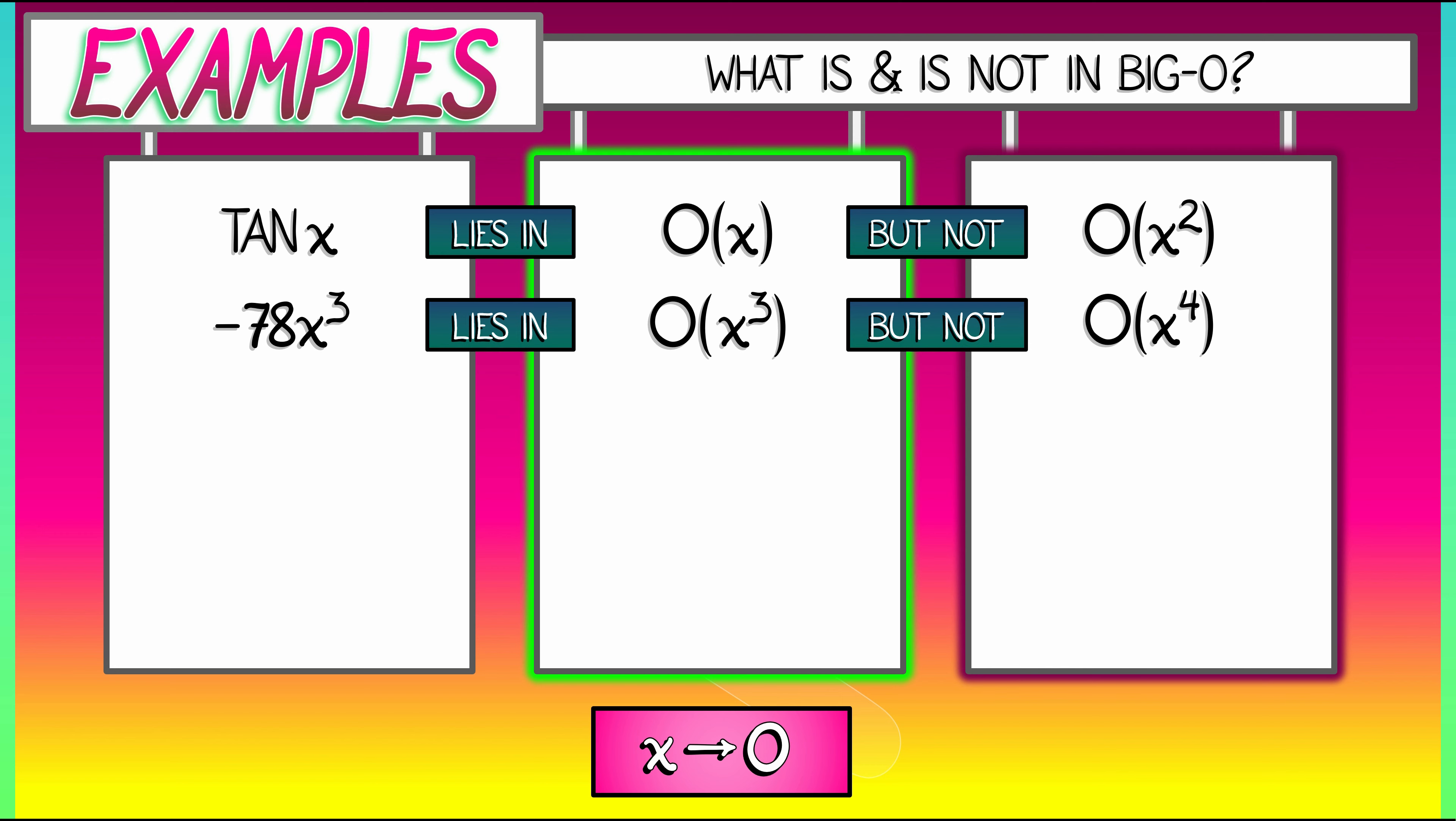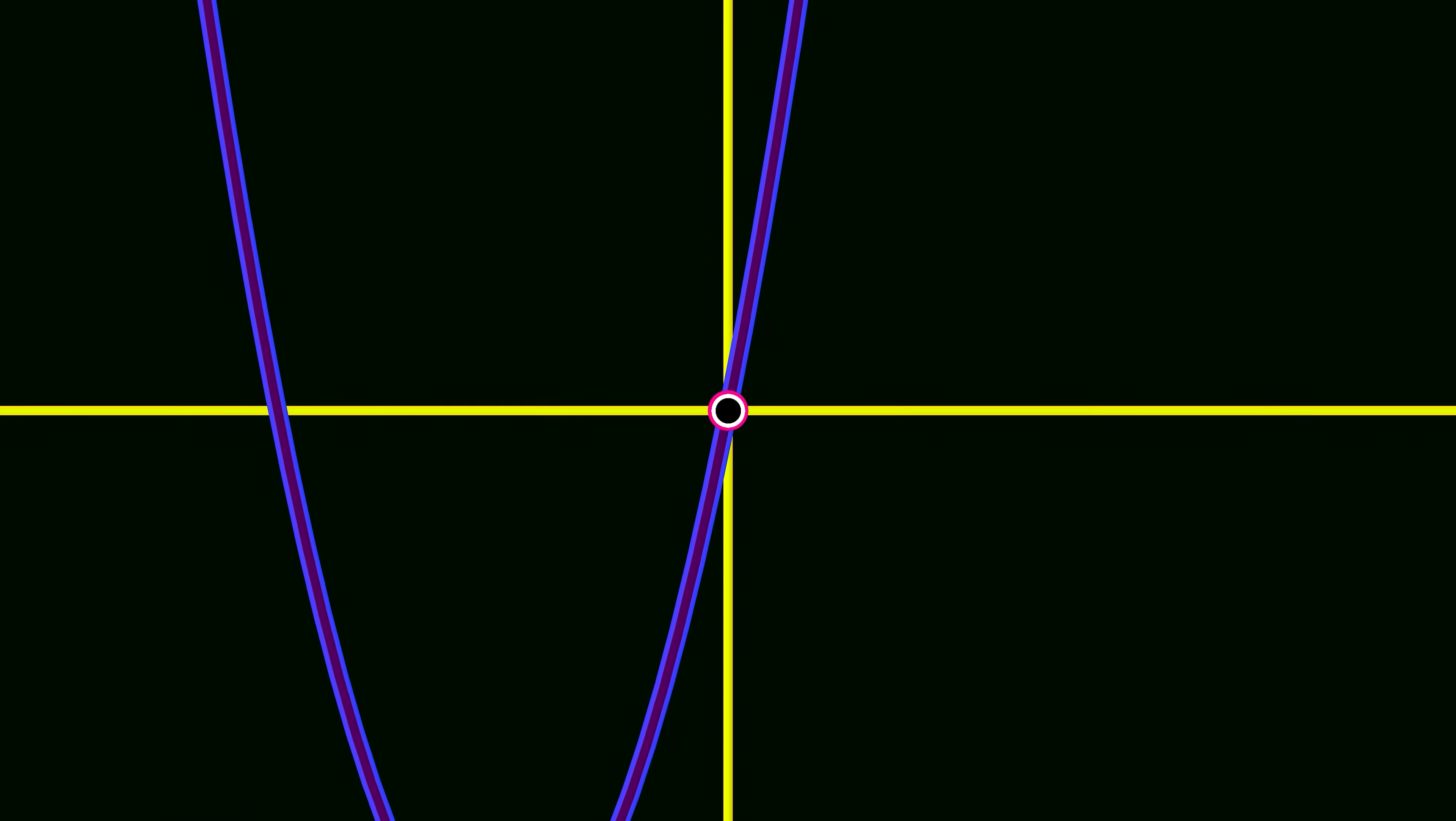Now, here's an interesting one. Consider 5x plus 3x squared. That has some linear growth, some quadratic growth. What does that lie in? It lies in big O of x, but not in big O of x squared. That lower order term, 5x, that dominates the quadratic term, 3x squared, in the limit as x approaches zero. And you can really see that if you draw the graph. That 3x squared, it hardly matters at all the closer and closer you get to zero.